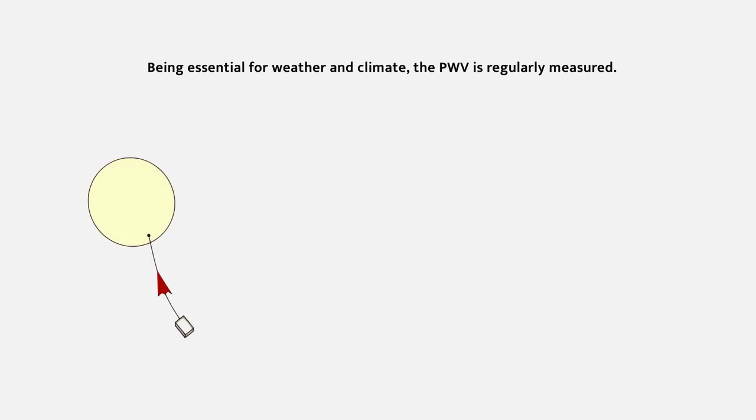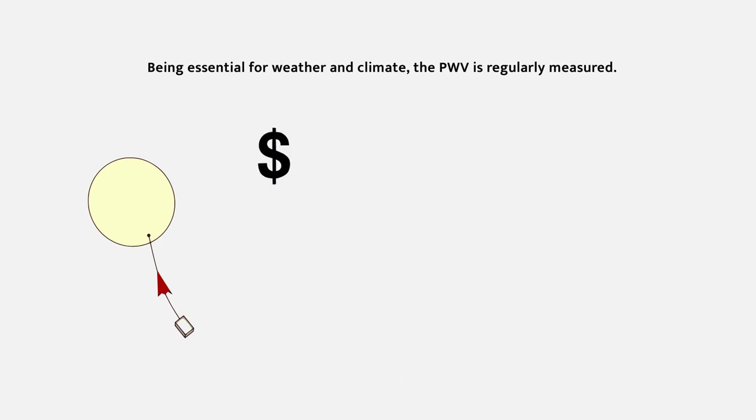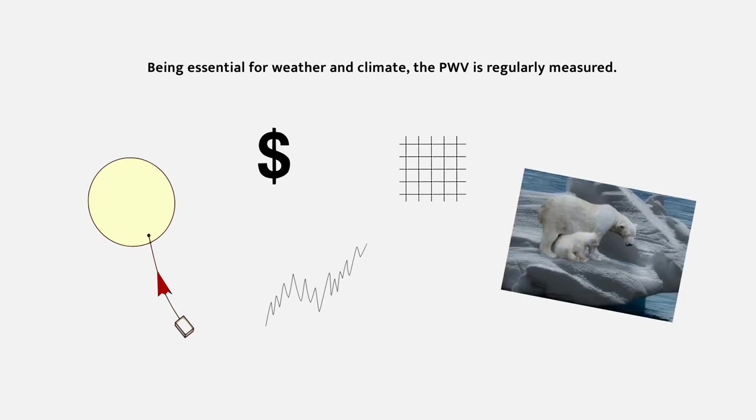Meteorological instruments such as radiosondes are used, but they are expensive and the data do not have sufficient temporal and spatial resolutions. Also, in-situ measurements are not always easy to collect. Think of polar regions for instance. Therefore, other useful techniques are welcome.